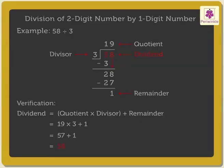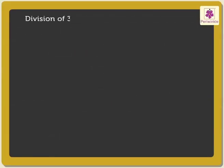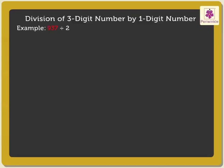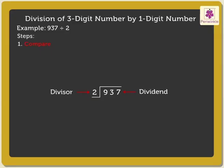Now, we will solve an example of division of a 3-digit number by a 1-digit number. Let us find out the quotient for 937 divided by 2. Firstly, compare the digits. We compare the leftmost digit of the dividend, 9, with the divisor 2. 9 is greater than 2, and therefore we can divide 9 by 2.